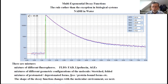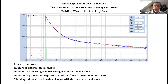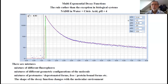Other things causing multi-exponential behavior include mixtures of geometric configurations of the molecules, stretched or folded forms, and protonated or deprotonated forms. The conclusion is: the shape of the decay function changes with the molecular environment. This is also demonstrated with NADH in water when I add a little citric acid at pH 4—you see a dramatic change in the fluorescence decay. So we know to expect multi-exponential decays and we must analyze these changes.